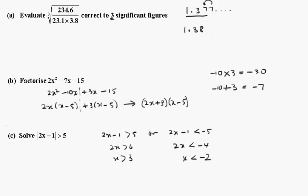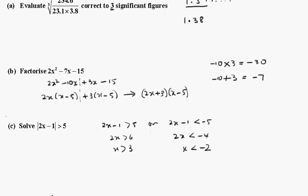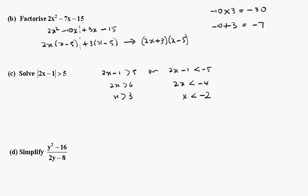Okay, I should have said part a is worth 1 mark, and all the others are worth 2. Now this one, factorising the top, you get y minus 4, y plus 4, and this is 2 outside of y minus 4. These cancel out, and you get y plus 4 over 2.